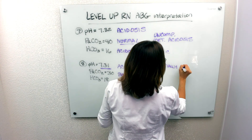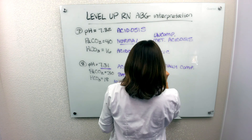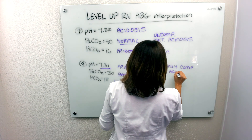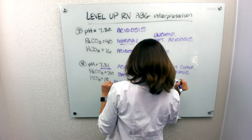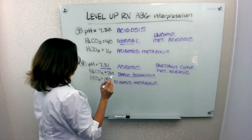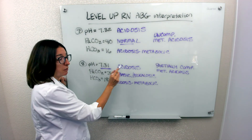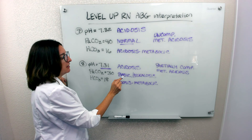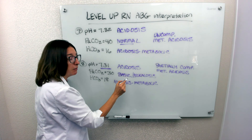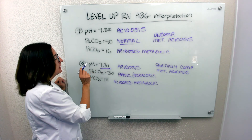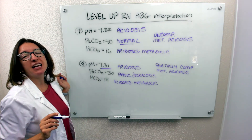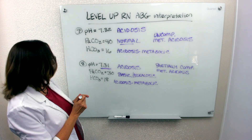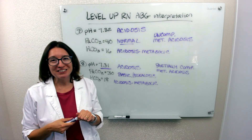The metabolic system is responsible for the acidosis. The respiratory system is trying to compensate by becoming more basic, but it has not fully done the job because our pH is still out of range. We'll pick it up with more problems soon.